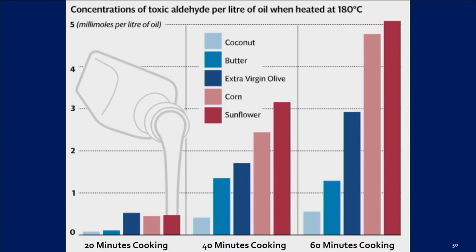Looking at a histogram of toxic aldehyde production at 20, 40, and 60 minutes of cooking, the light blue colors — coconut oil and butter — show very low toxic aldehydes versus the corn and sunflower oil in the pink and purple colors on the far right.